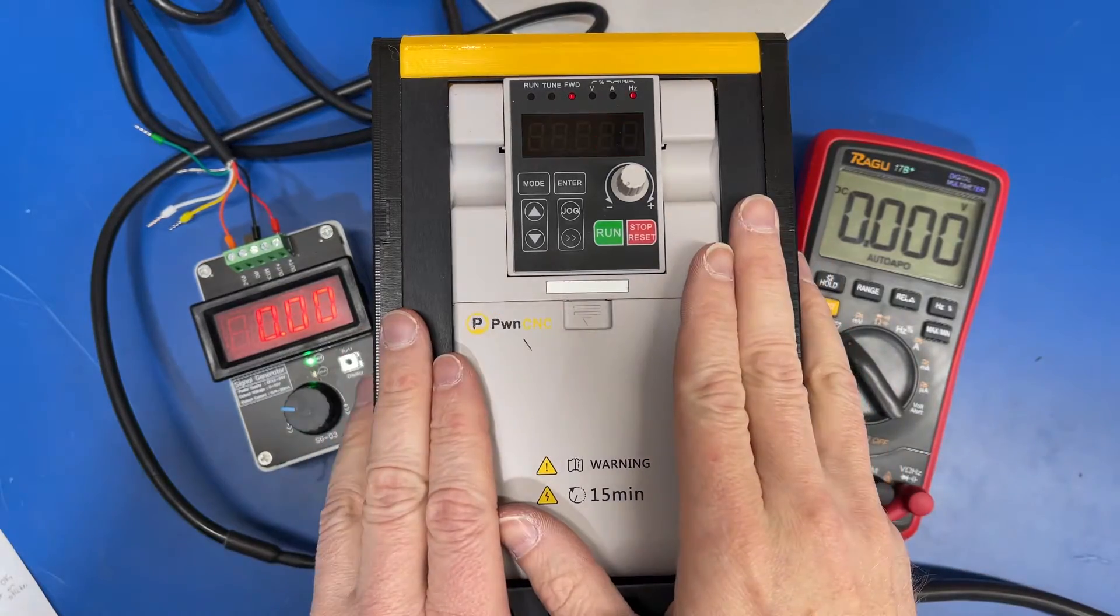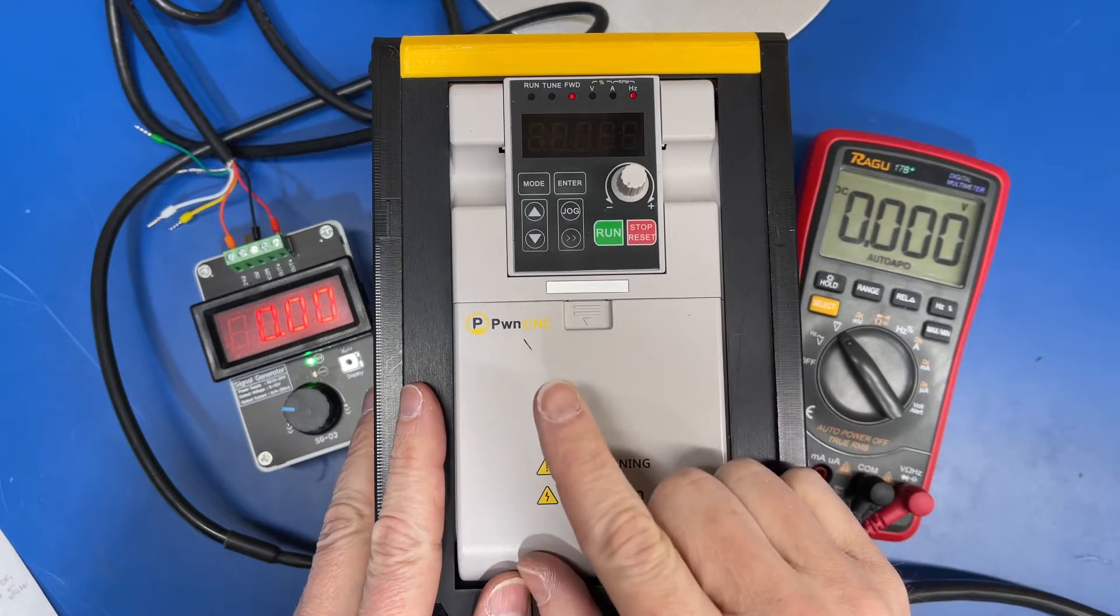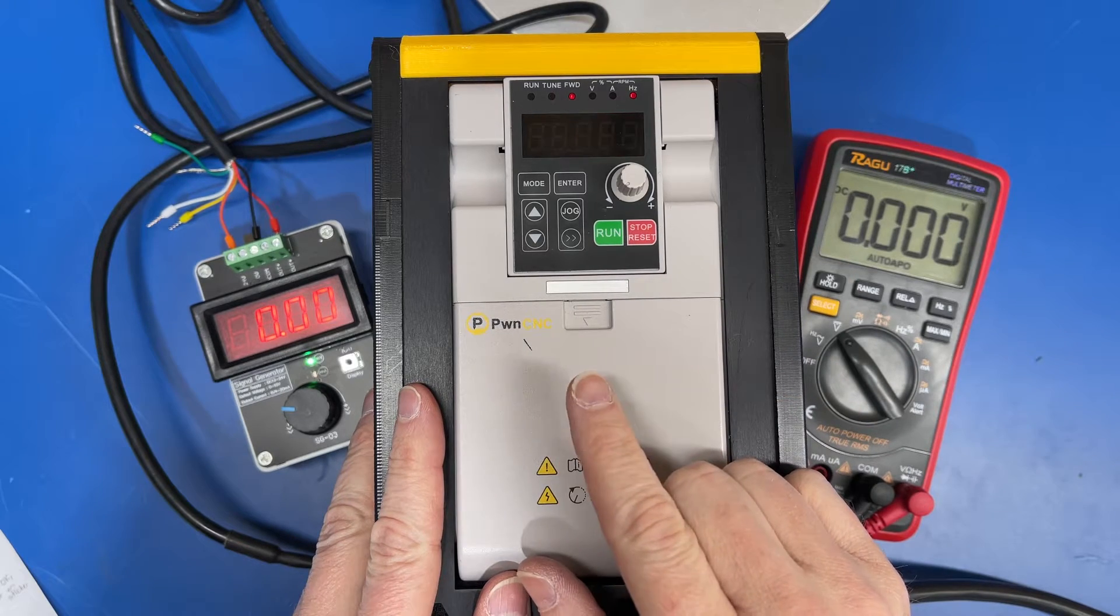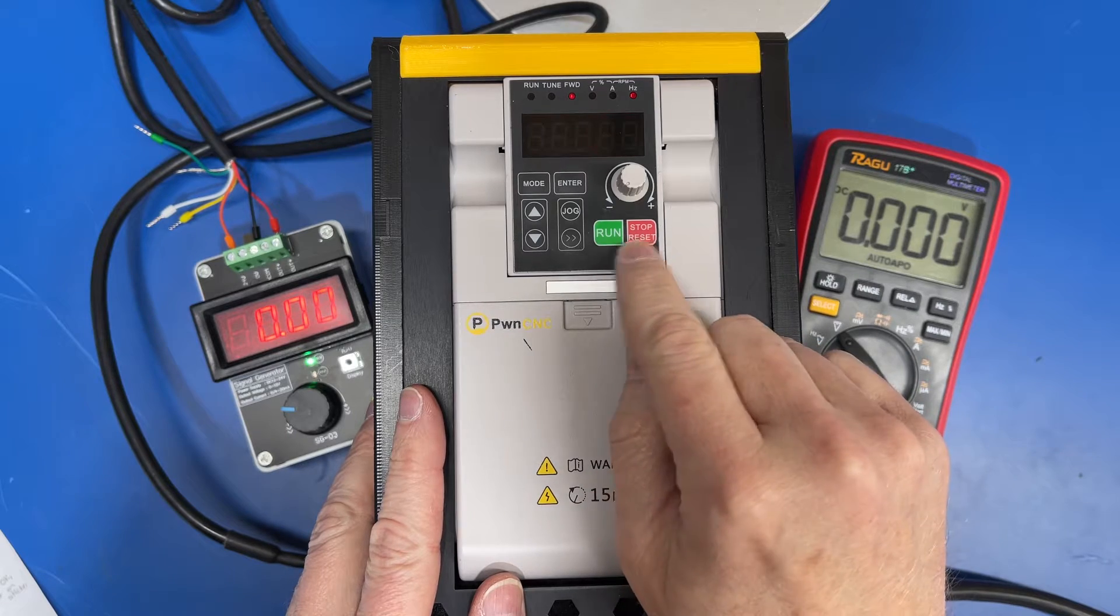So as you can see here, we've got our VFD. This is in our default configuration aside from the P003. It is currently set to 1, which enables these two buttons.